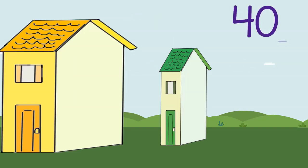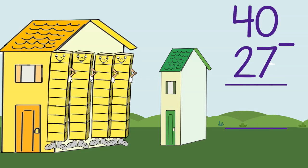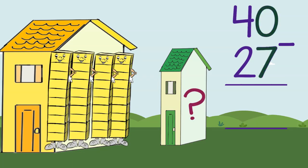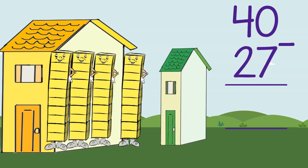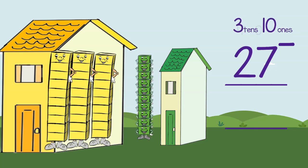40 take away 27. Hmm, there are no ones to cross out. I know. Take out one group of tens and turn it into 10 ones.